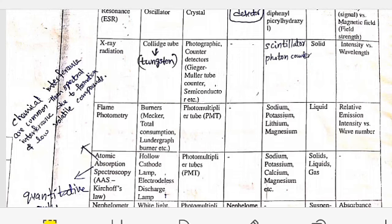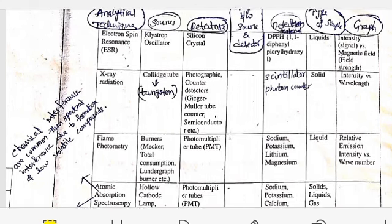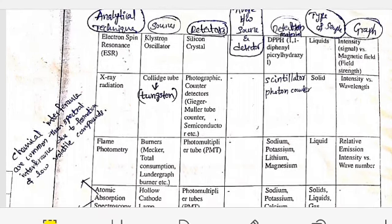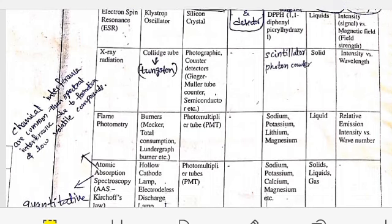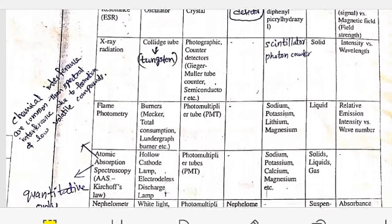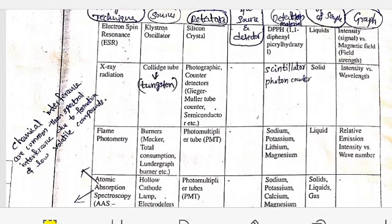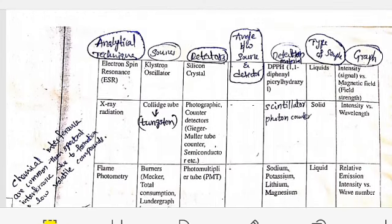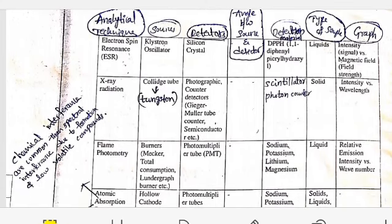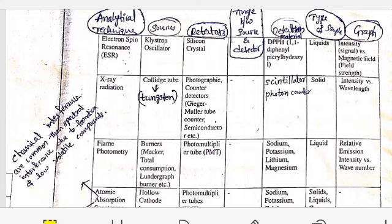For X-ray radiation, we take the source as a Coolidge tube which contains tungsten. These are some detectors like photographic counter detectors given here. The angle between source and detector is not important, detecting materials are scintillation photon counters, type of samples are solids, and we draw intensity versus wavelength.